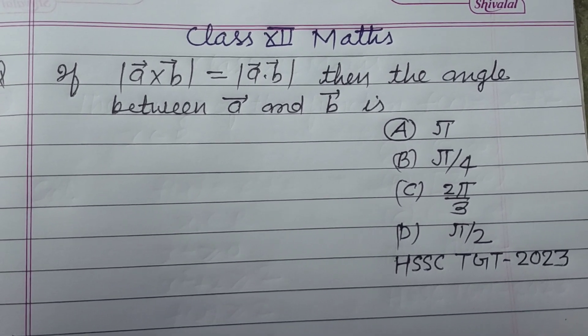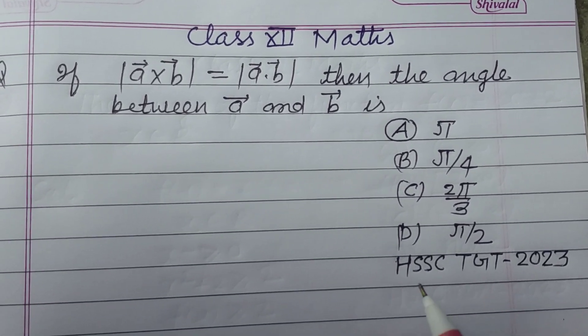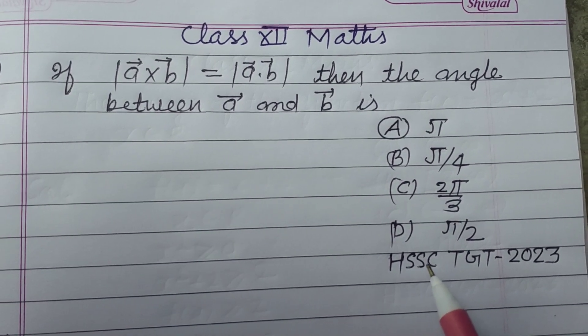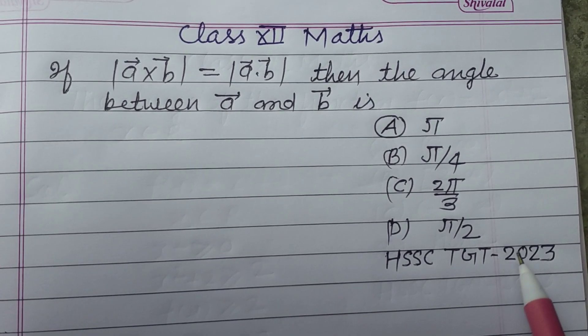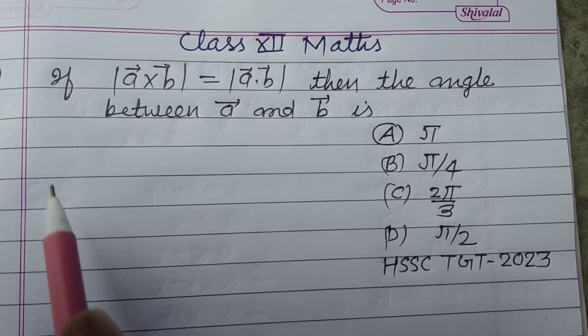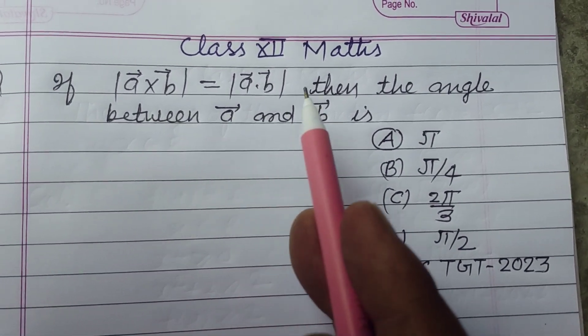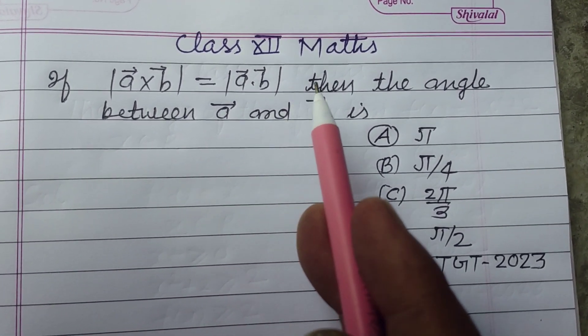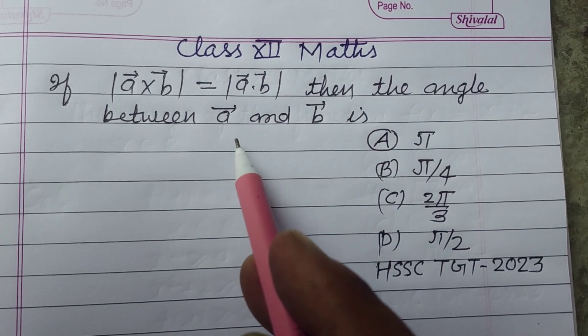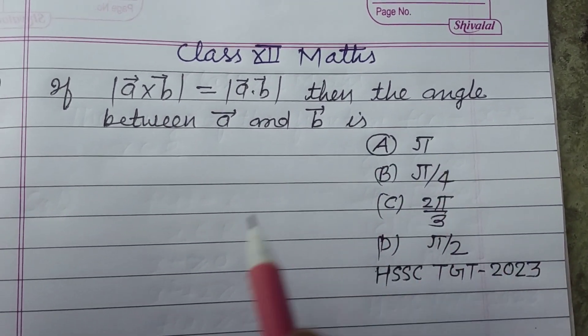Hello students, warm welcome to this YouTube channel. Question from HSSC TGT 2023. If A cross B is equal to magnitude of A dot B, then the angle between vector A and B is.